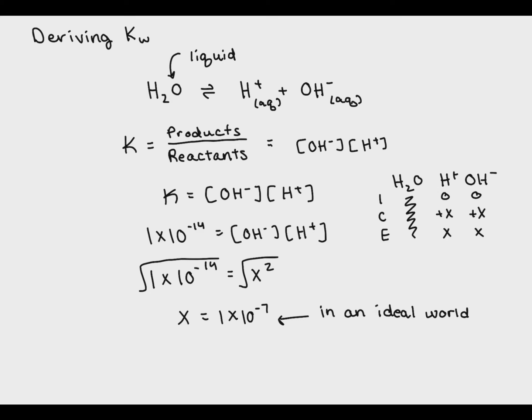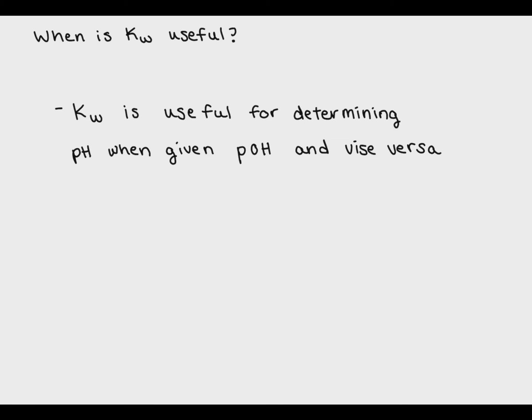Alright, now let's talk about Kw and how it can be useful. There are lots of uses for Kw, but one of the most common uses for it in general chemistry is to switch between pH and pOH.